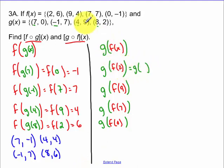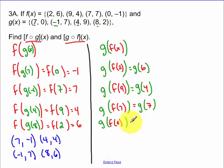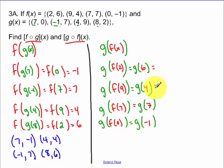F of 2 is 6. F of 9 — the y value is 4 — so I'm going to find g of 4. Now I'm finding g of f of 7: when x equals 7, y equals 7, so I'm going to find g of 7. G of f of 0: f of 0 is negative 1, so now I'm going to find those g of x values.